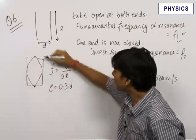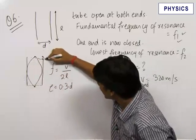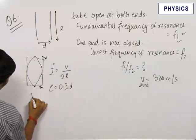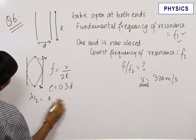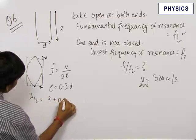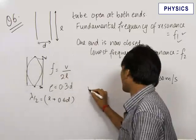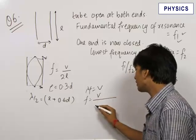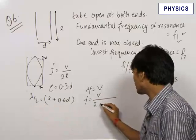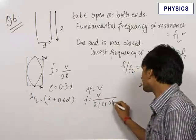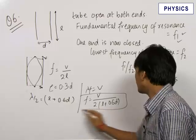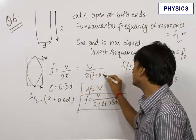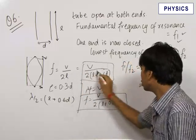When the tube was open at both ends, we have two end corrections, so we write that lambda by 2 is equal to L plus 0.6D. We know that lambda F is equal to V. Therefore, frequency will be equal to V upon lambda, that is V upon 2 times L plus 0.6D. That is the end correction done two times.